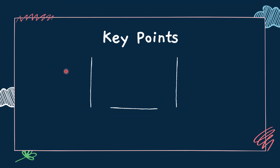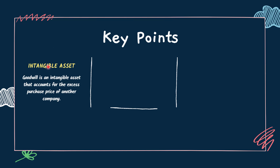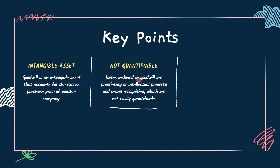So the key points are: Goodwill is an intangible asset that accounts for the excess purchase price of another company. Items included in goodwill are proprietary or intellectual property and brand recognition, which are not easily quantifiable. Goodwill is calculated by taking the purchase price of a company and subtracting the difference between the fair market value of the assets and liabilities.